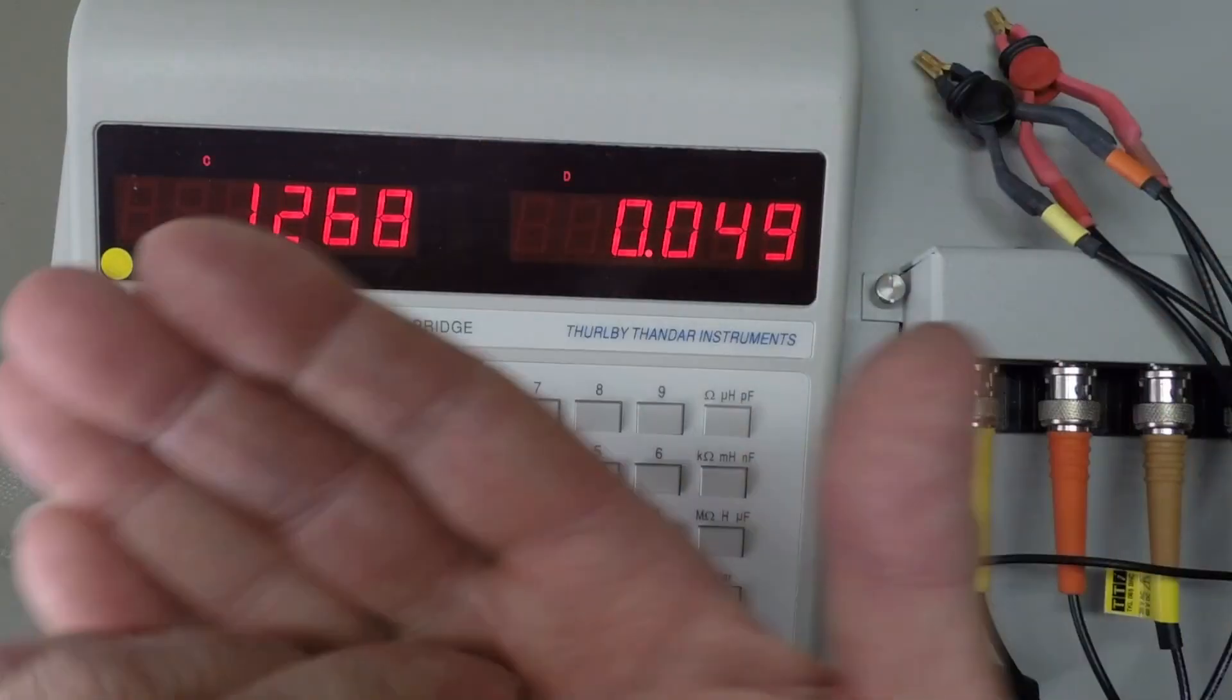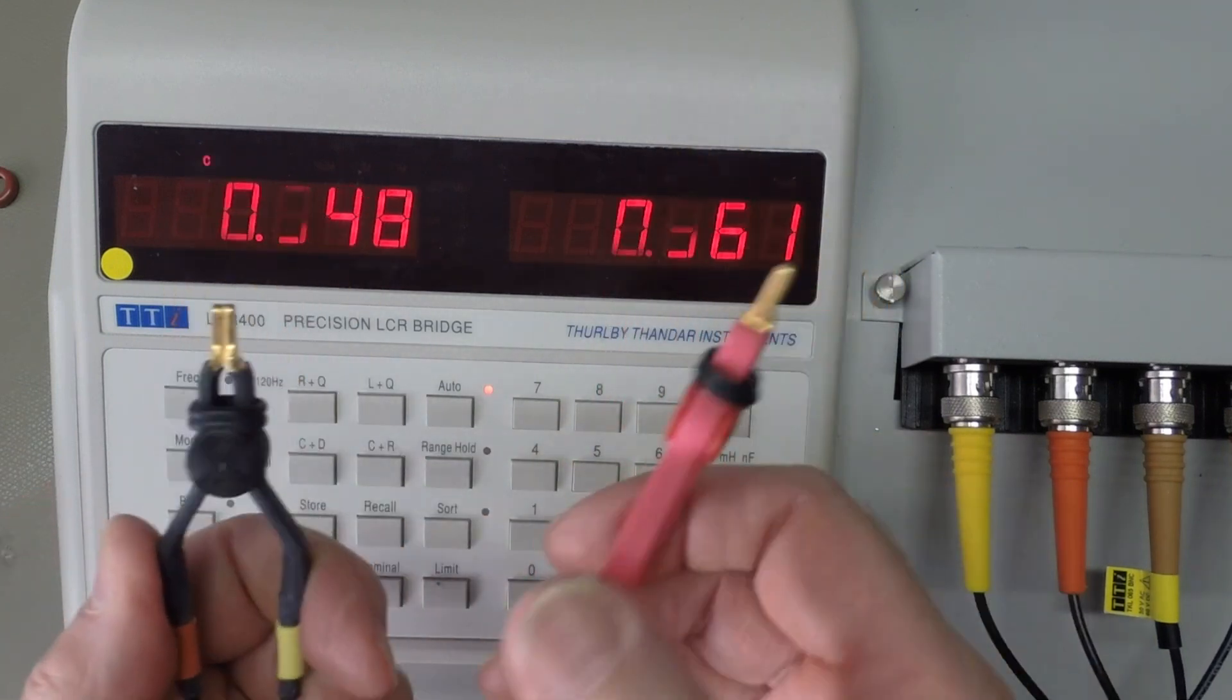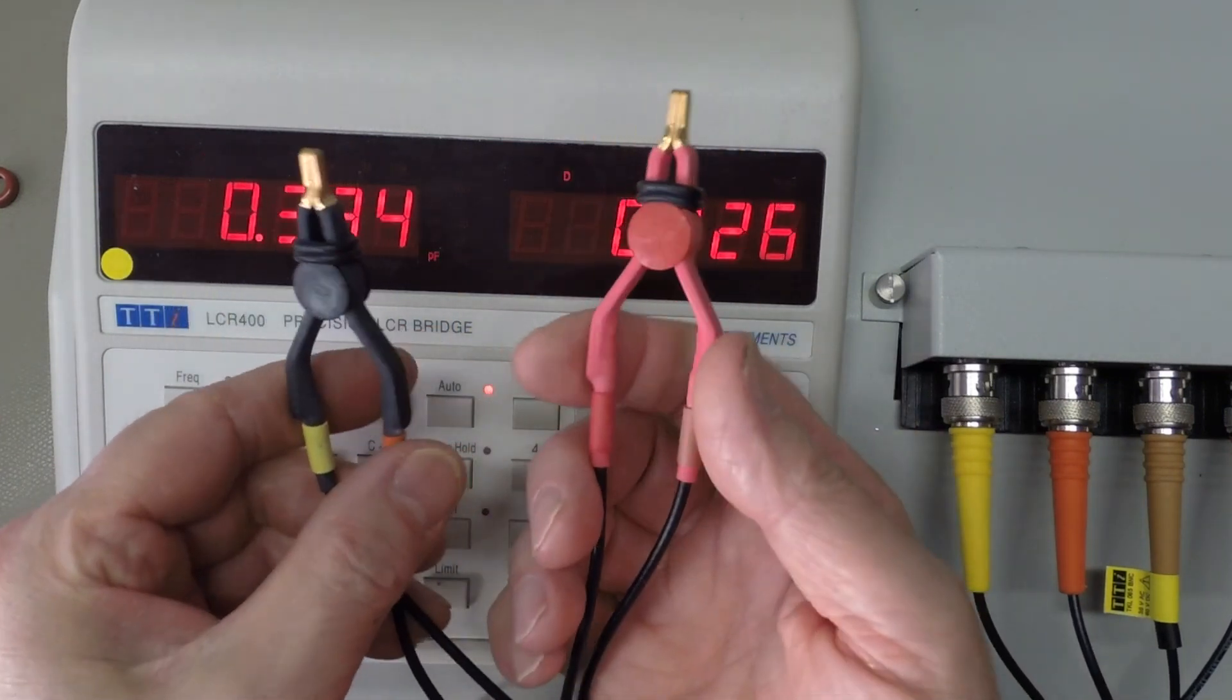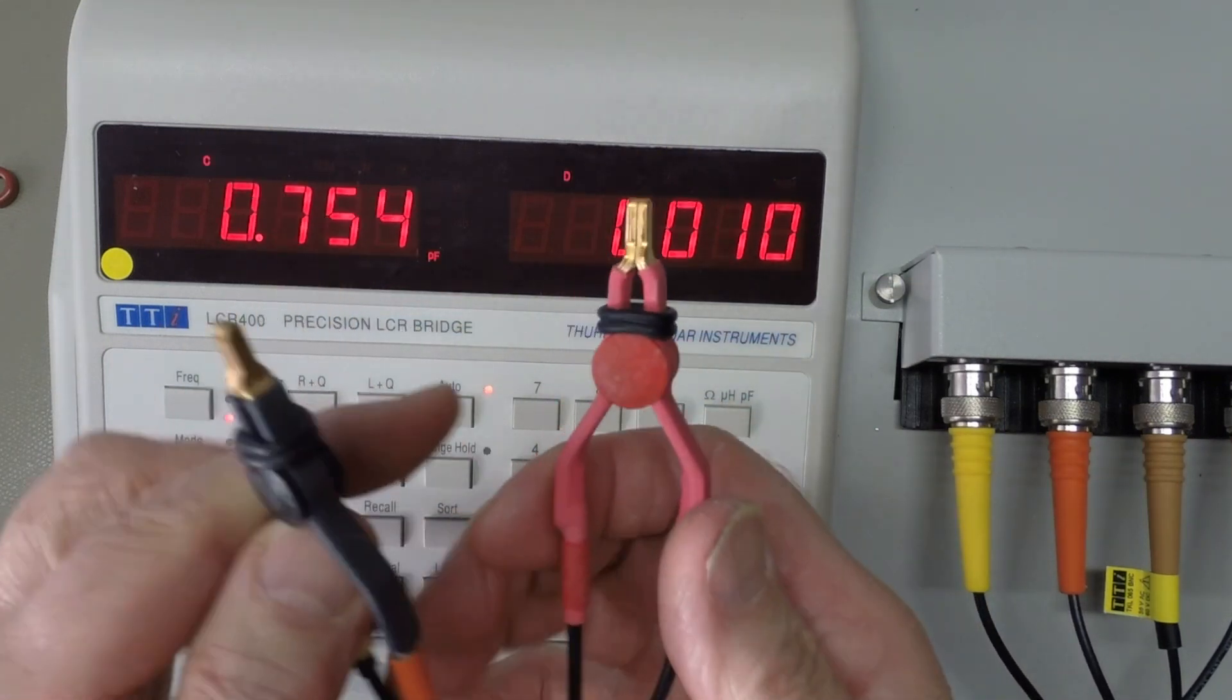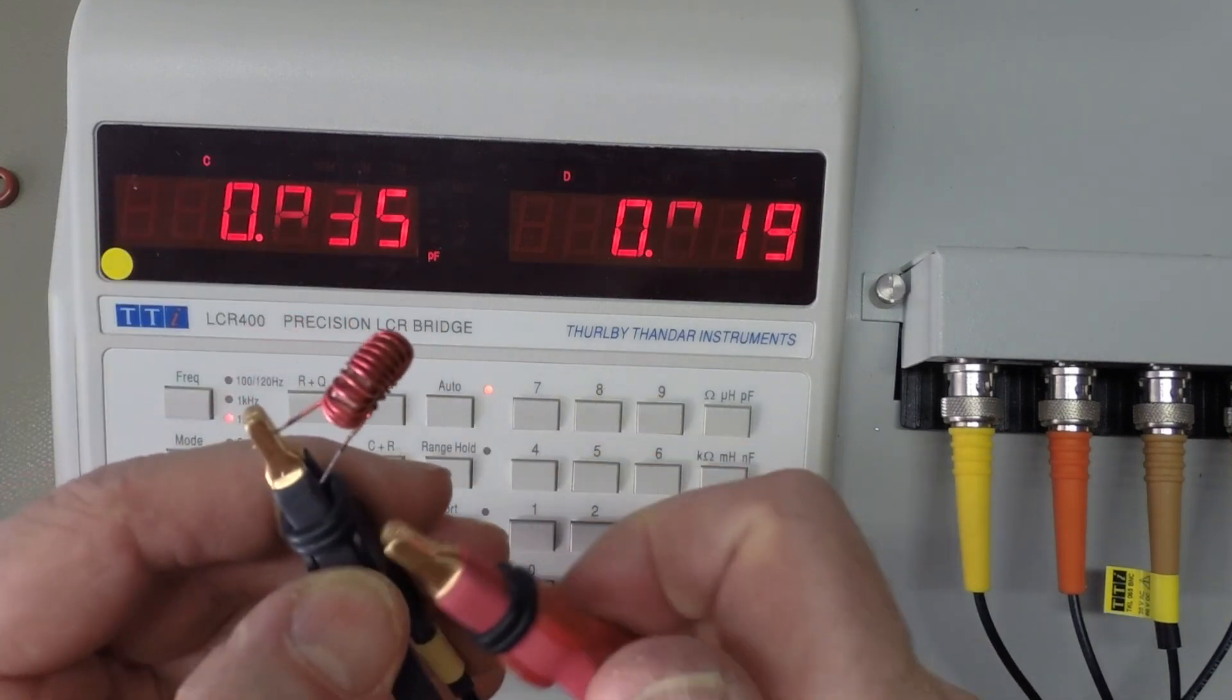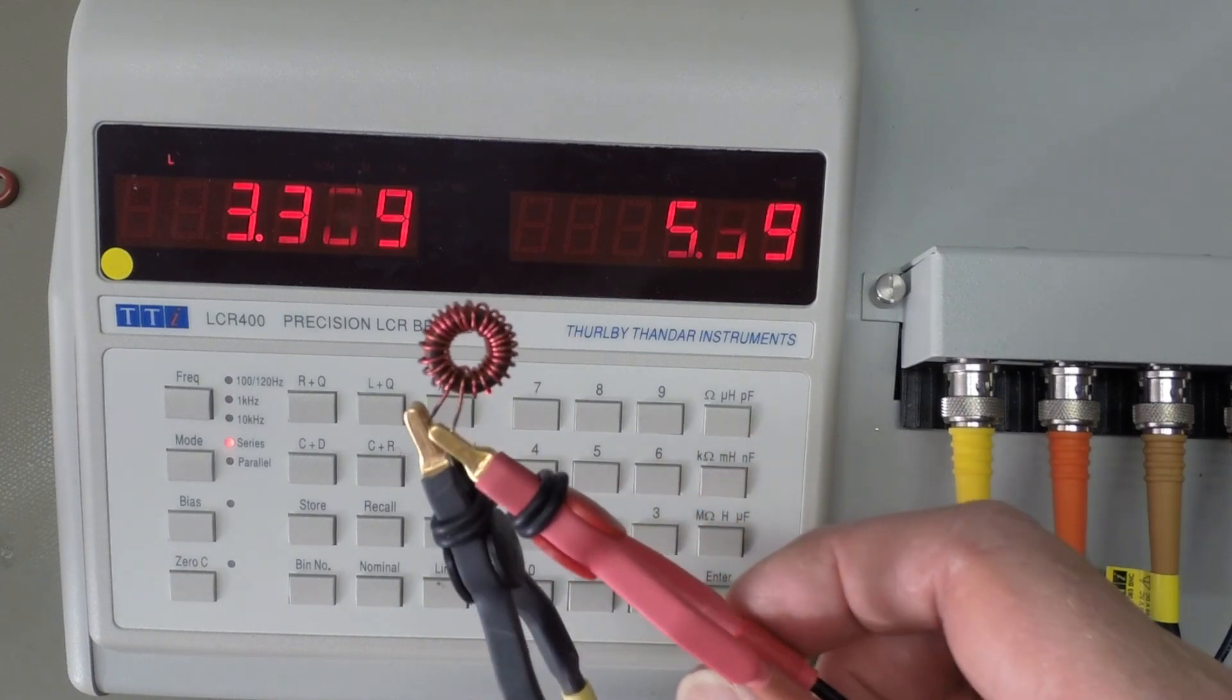But we're going to use the measurement device that I've got here, and to keep accuracy, this measurement device, rather than just two connections, has got sense and drive connections to each side of the measurement. So we'll clip our inductor between these two prongs, and here's one that I've just finished winding, just to check that everything worked, and as you can see, we've got about 3.3 microhenrys, which is close enough for jazz.